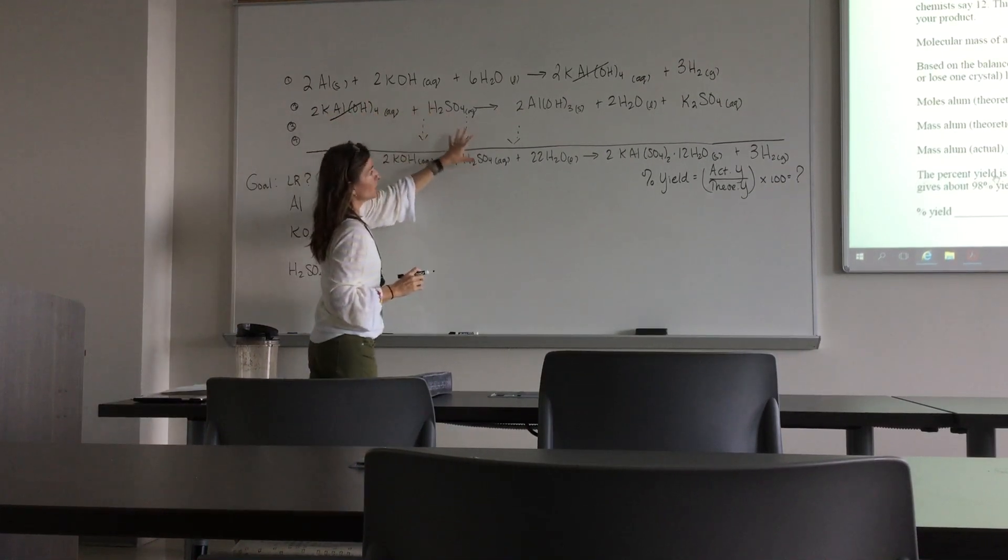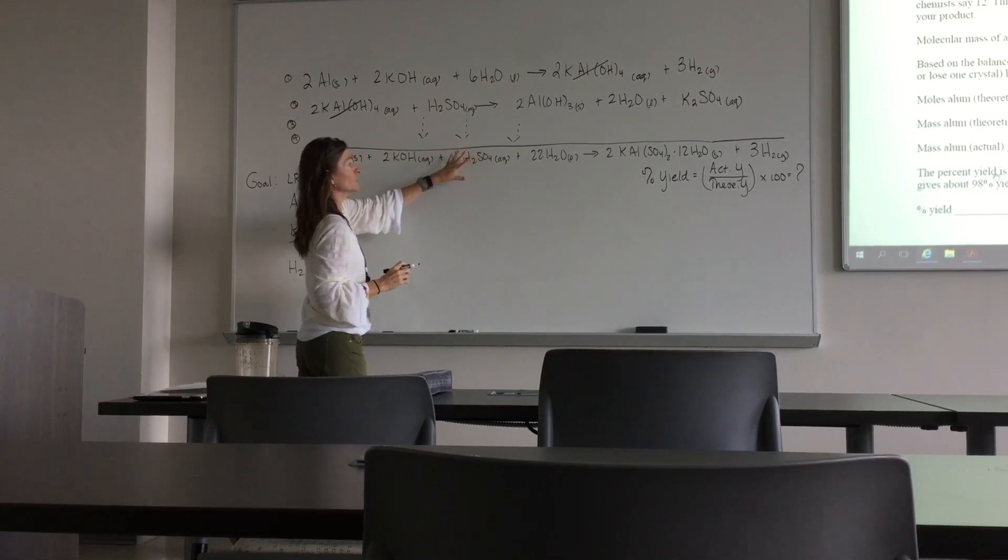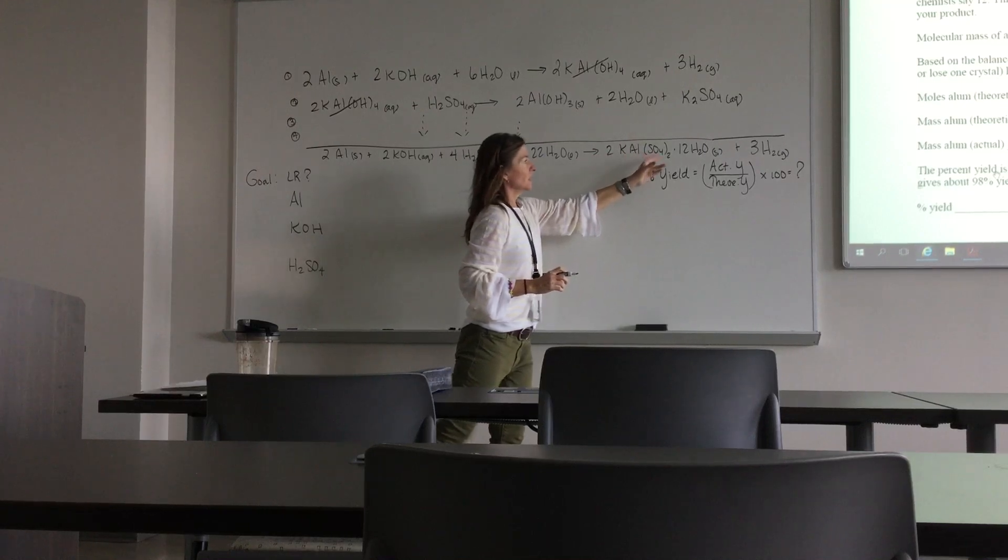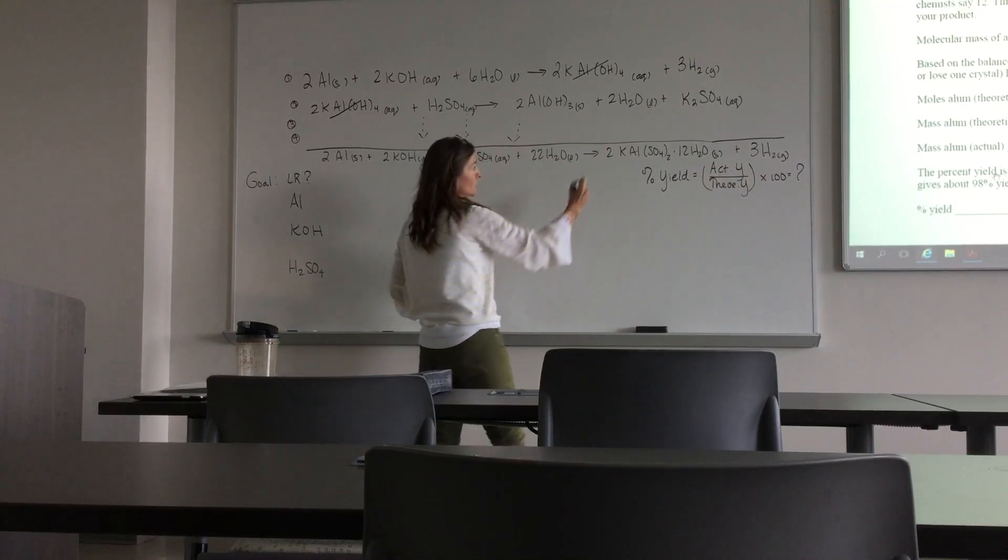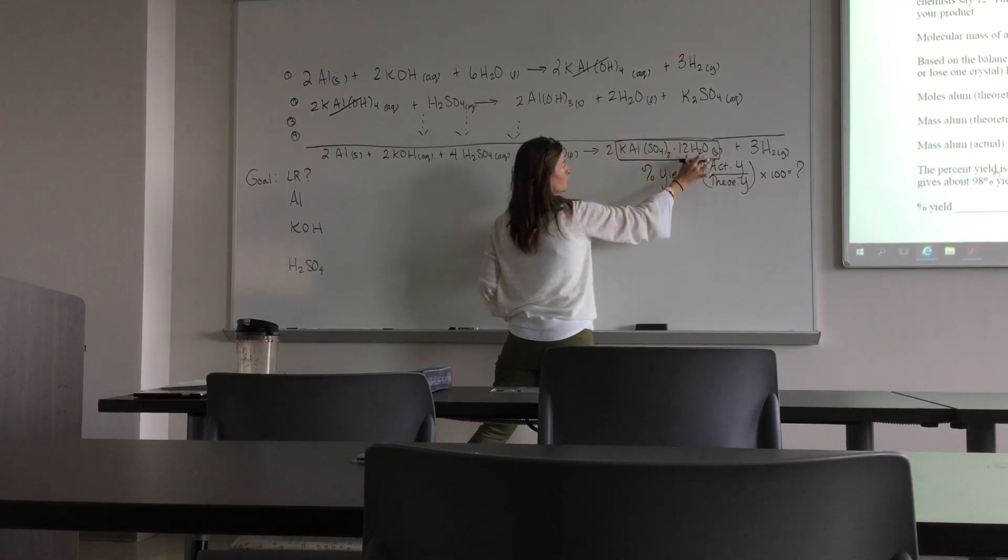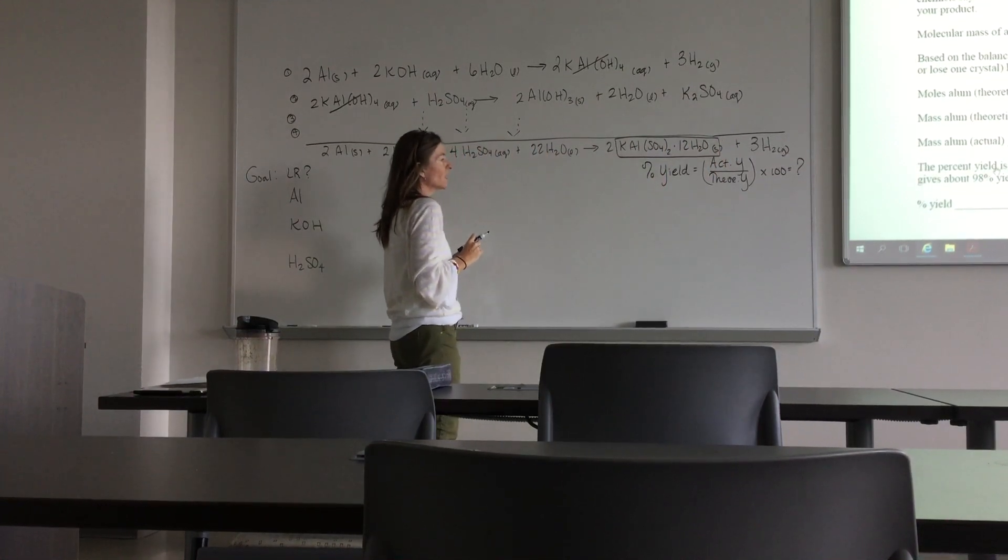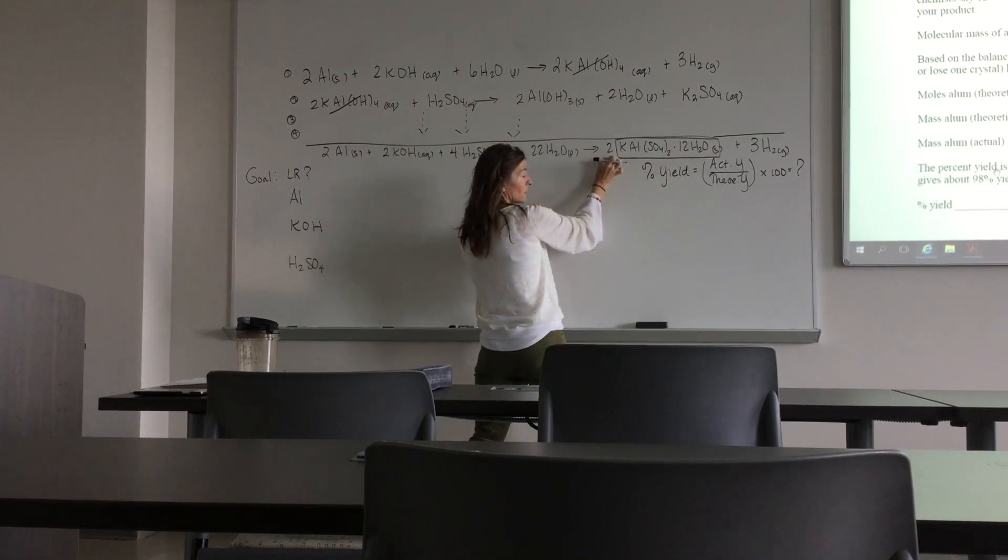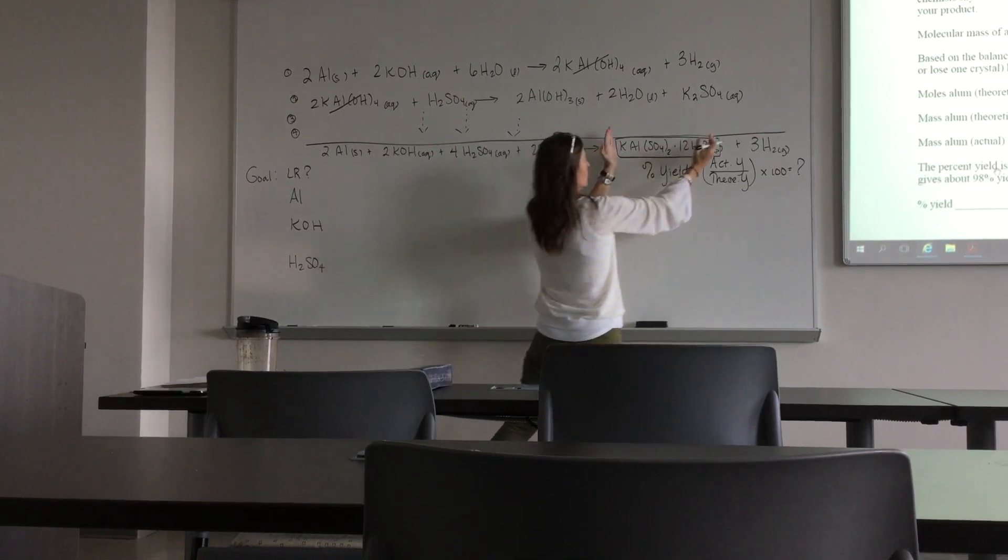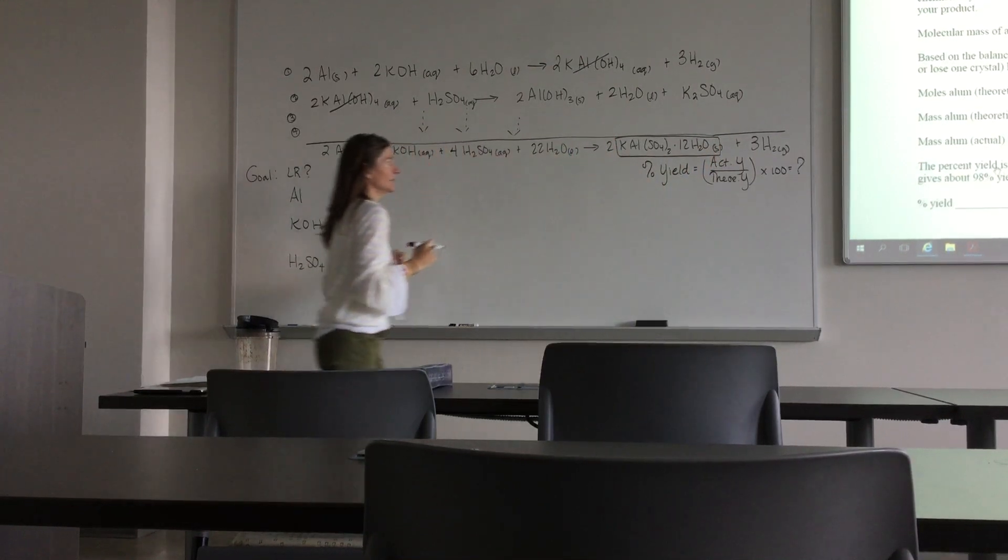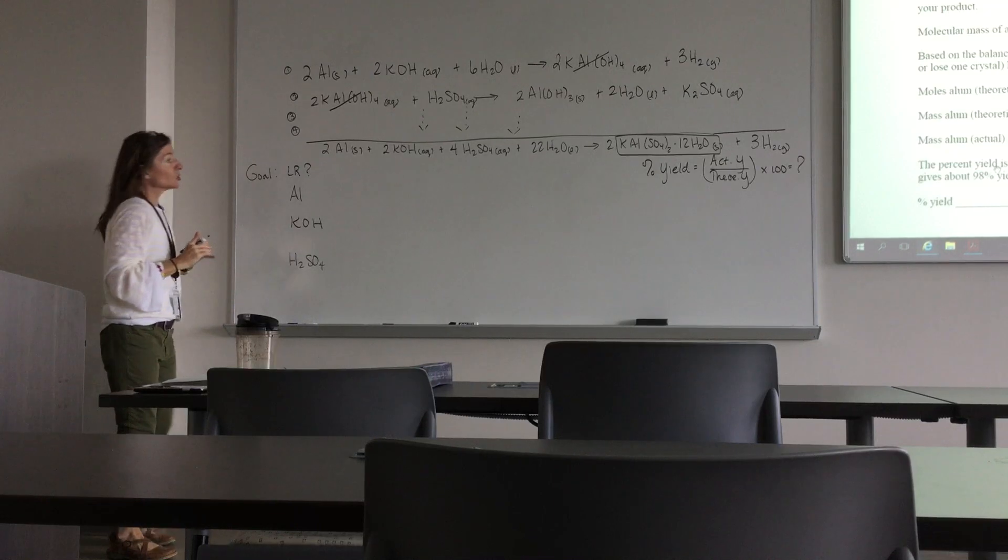You will continue with that process all the way through, and then at the end you should get this balanced chemical equation. Now notice this product here includes 12 hydrates or 12 waters. This is your alum. The two is only there to balance the equation. This is the formula for alum that you produced.